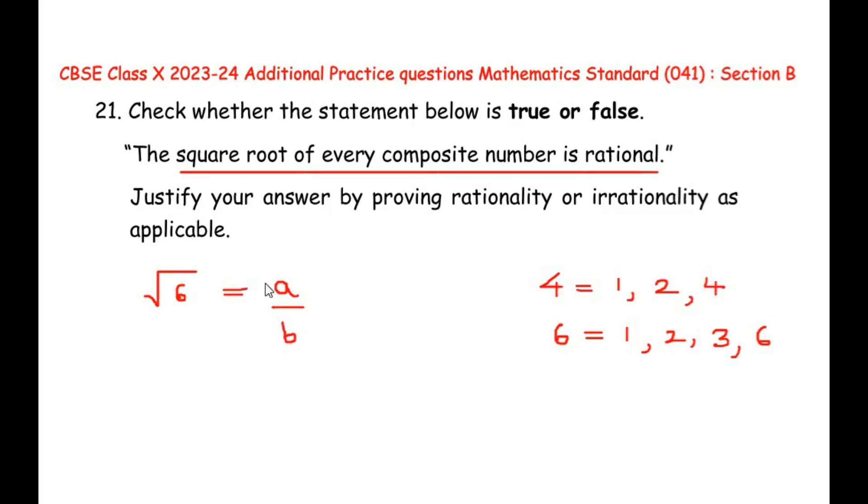There are certain conditions for them to be rational. One of them being the denominator b should not be equal to 0, because if you take the denominator b as 0, this entire thing goes to infinity. The second thing is a and b should be co-primes. Co-prime means the highest common factor of a and b should be just 1.